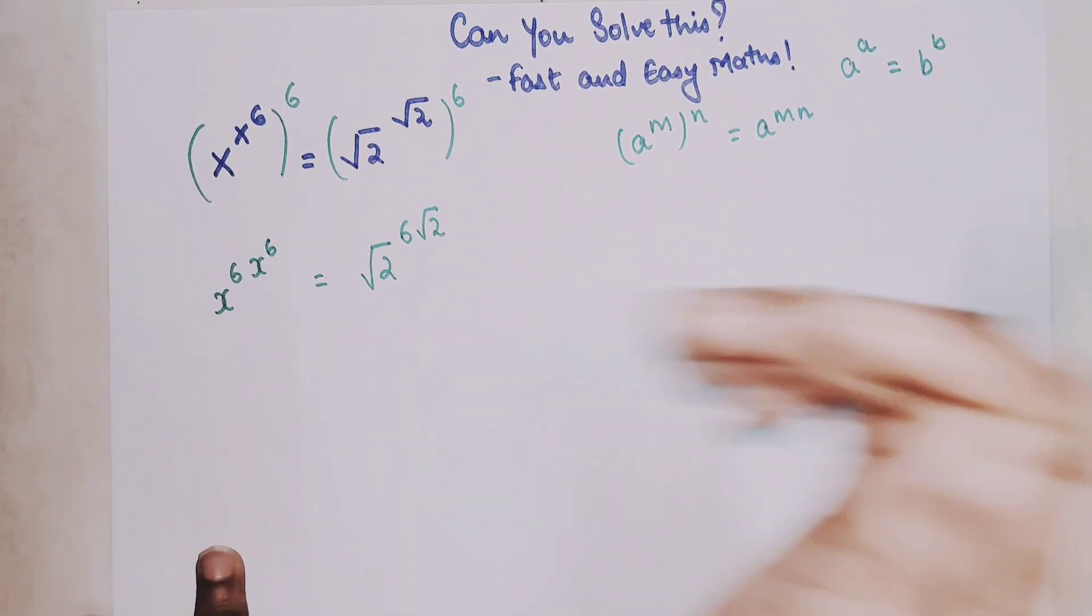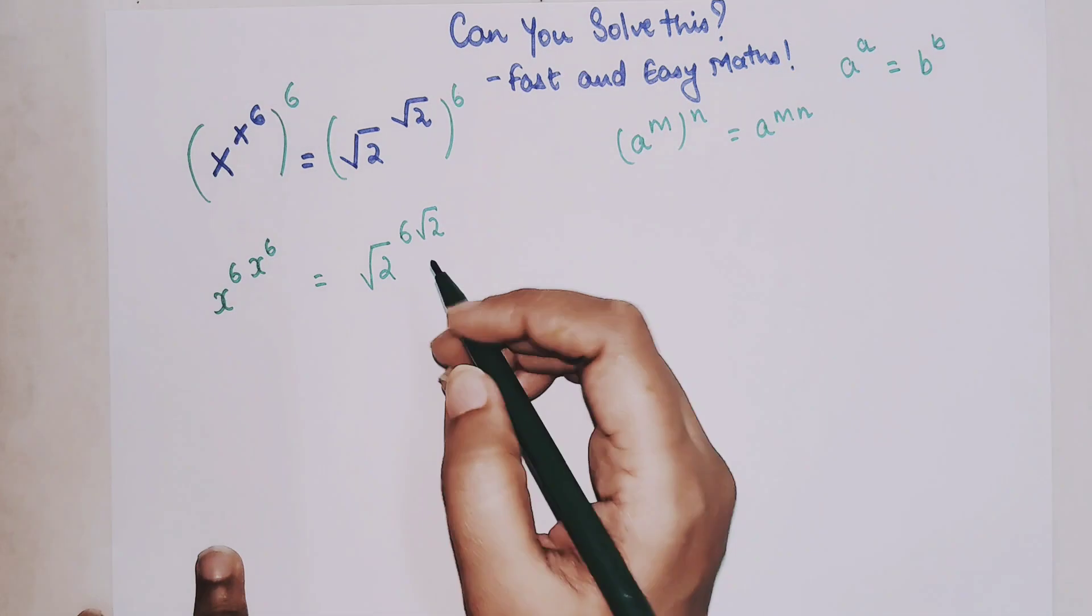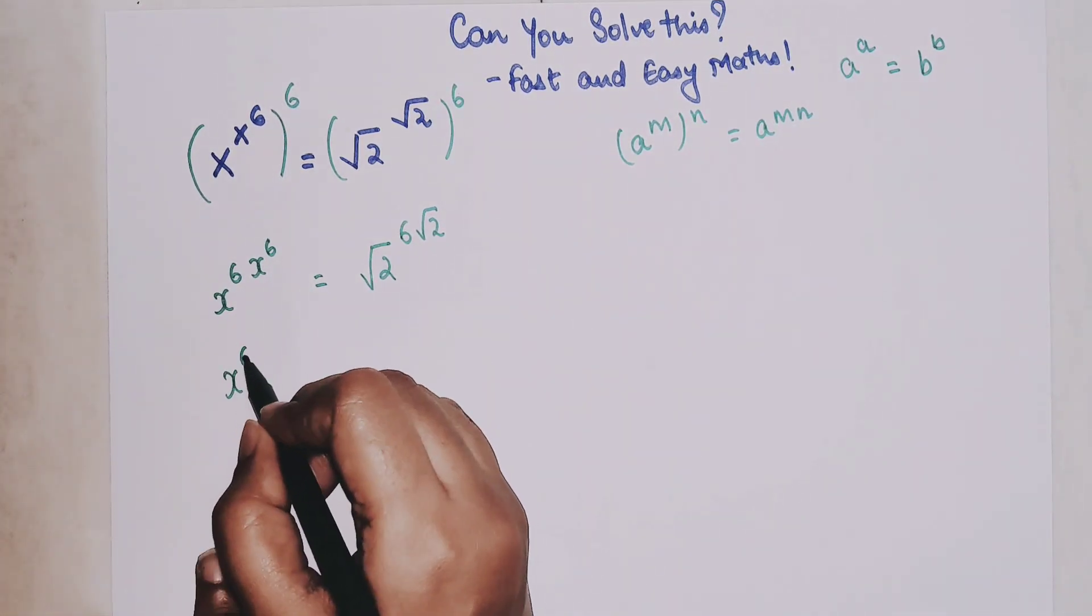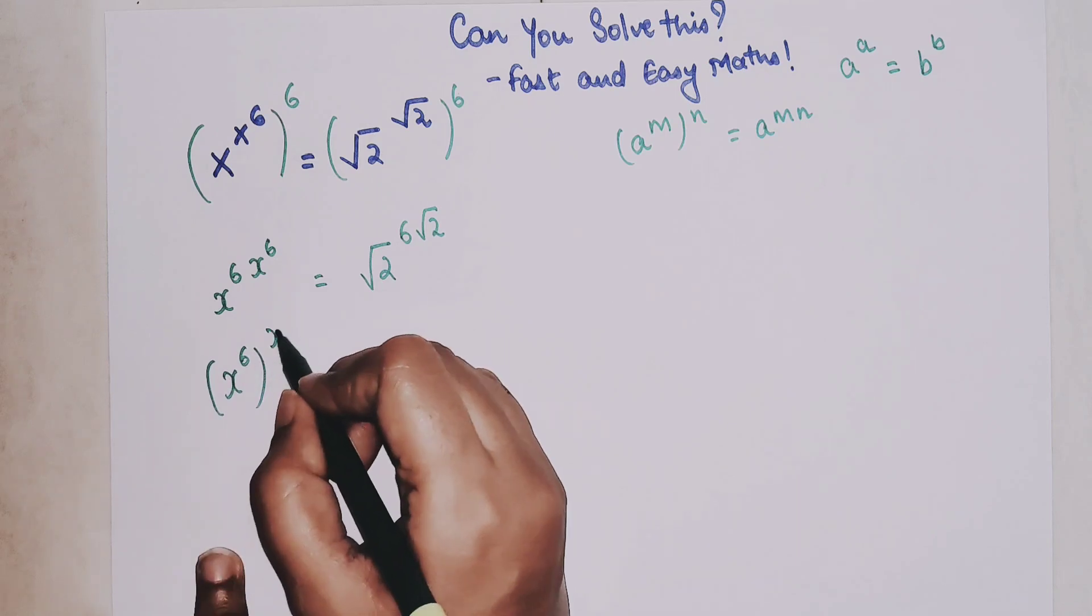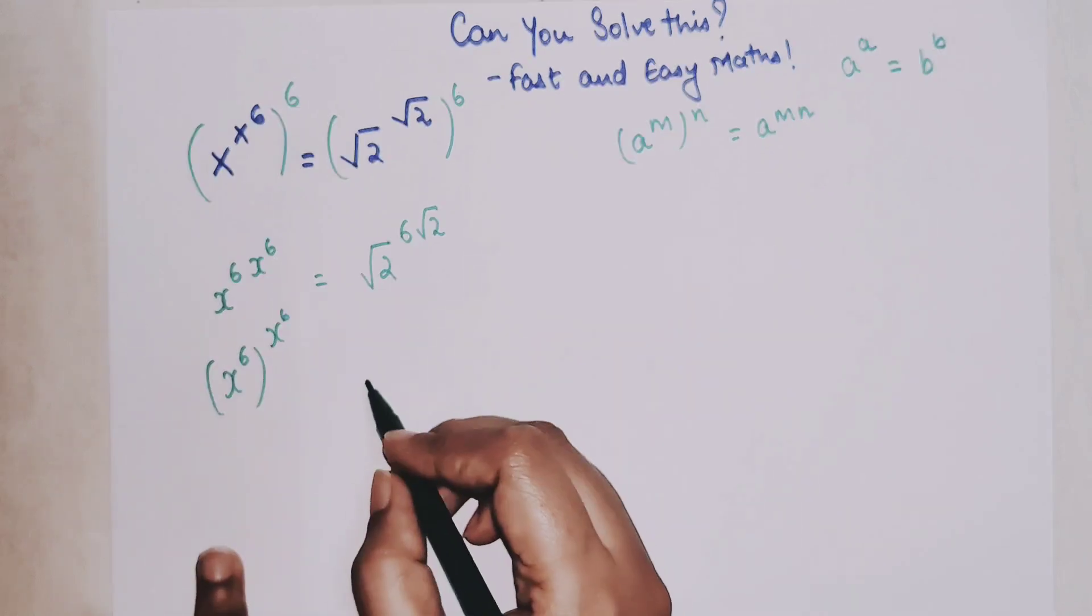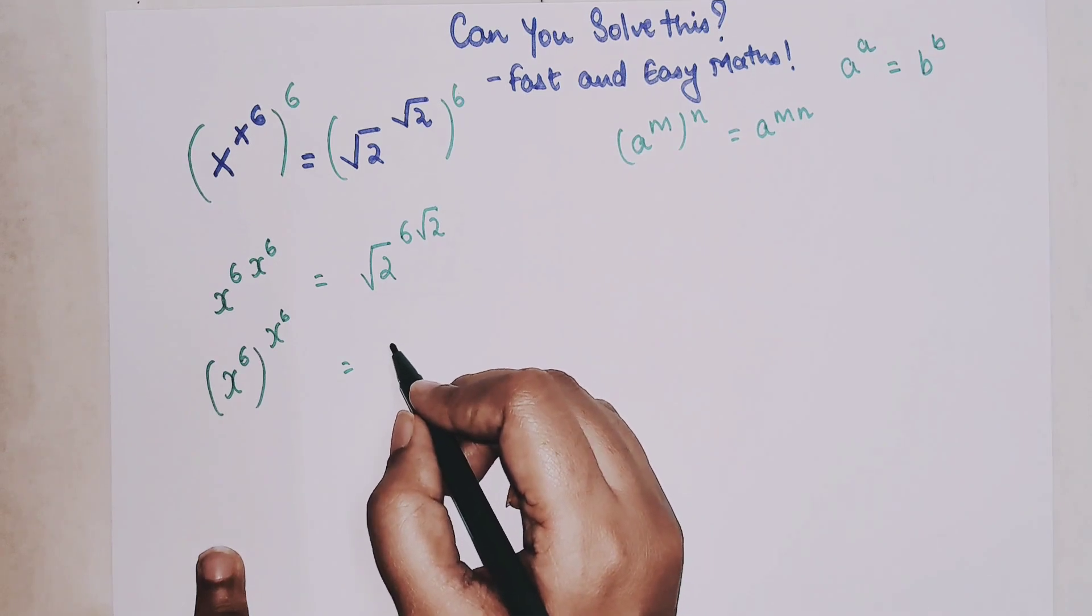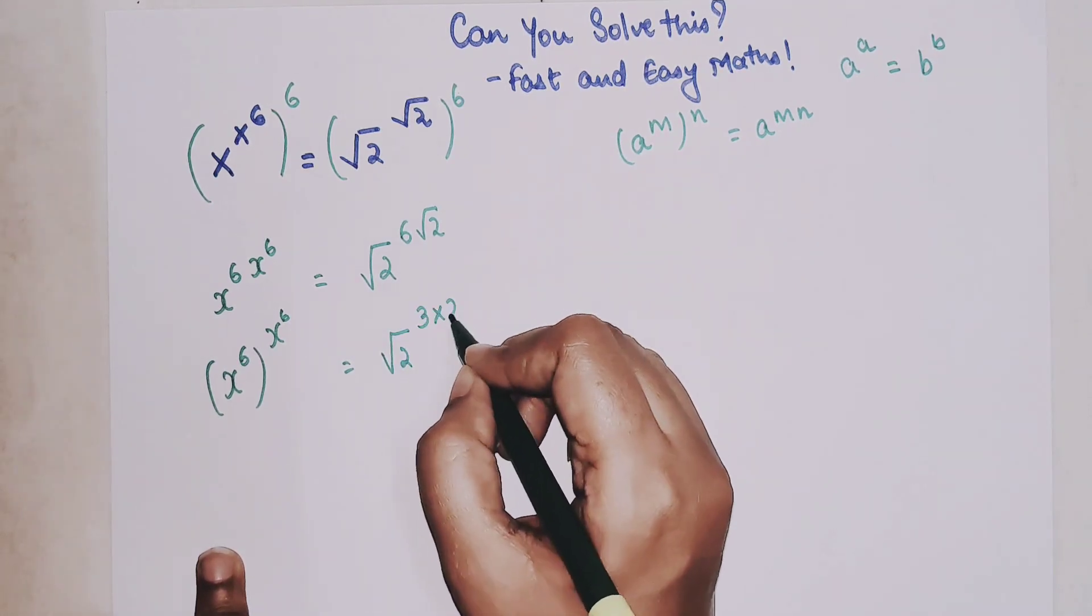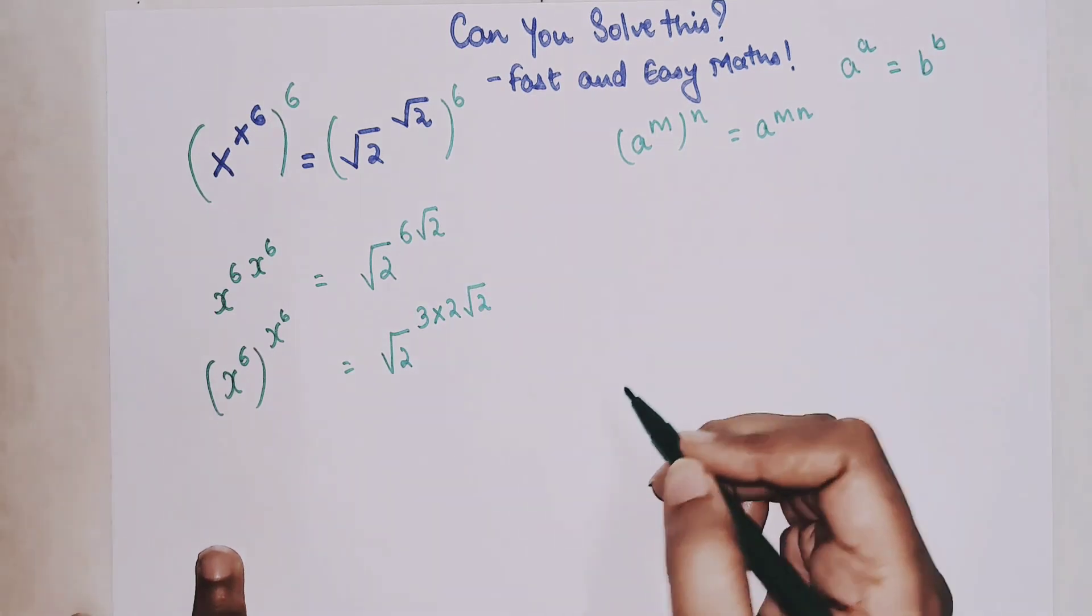So now the next thing which we will be doing is here I can write this in terms of x raised to 6 the whole and x raised to 6. And this 6 I can write it in terms of root 2. This can be written as 3 into 2 root 2.